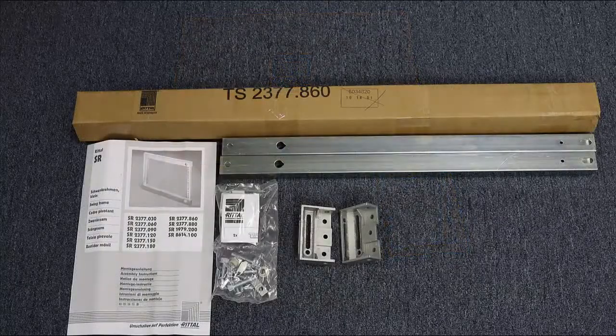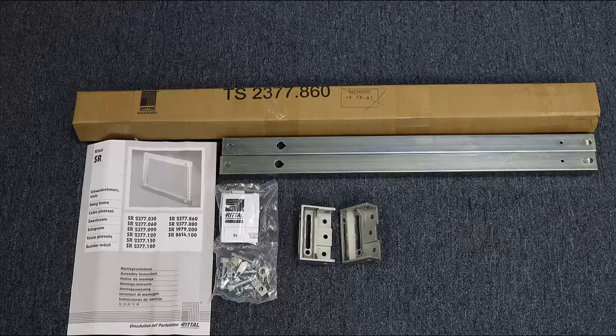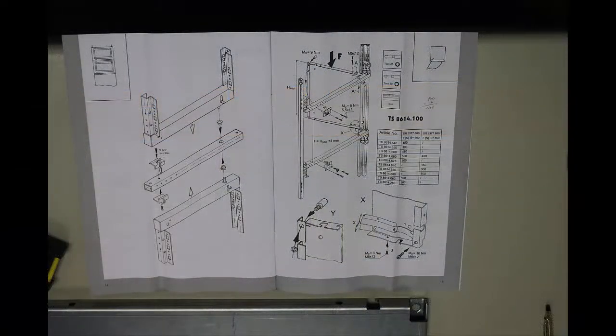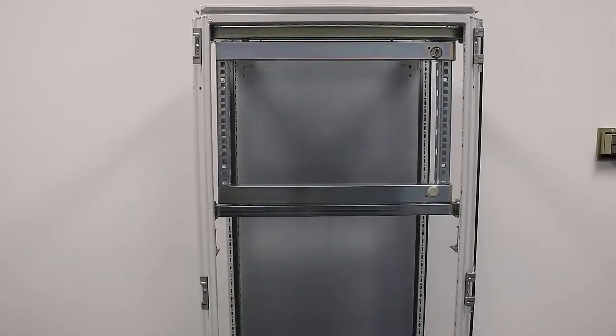The third part number that we need is your installation kit. It's the exact same installation kit as you would use for a swing frame. The instructions for hinging a panel are in the very last page of the swing frame instructions.